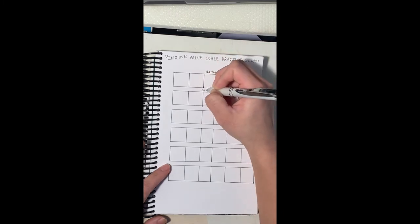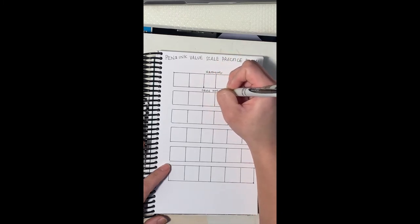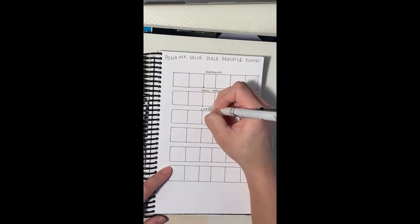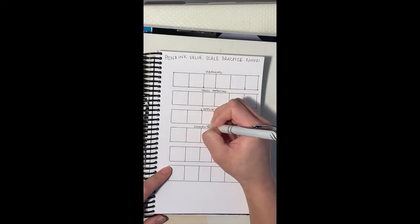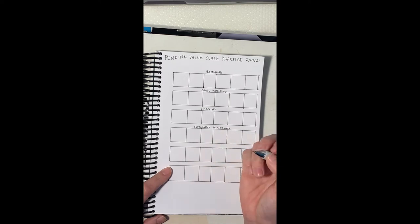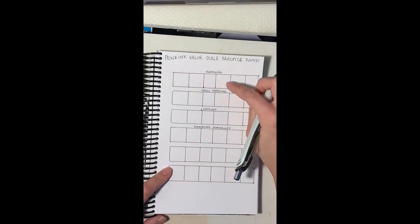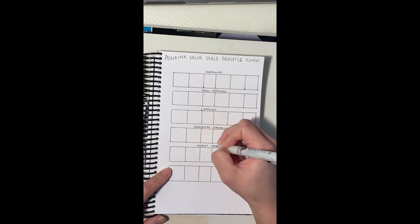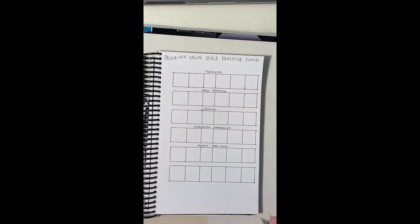And now I'm labeling them. We have hatching, cross-hatching, stippling, which is not on the worksheet, scumbling or scribbling, and then invent your own. And I have two rows for that. You don't have to do two. I just had an extra value scale.